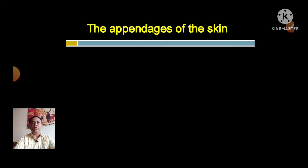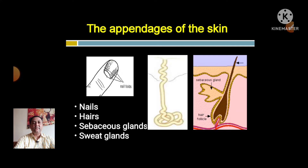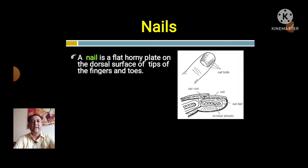Hello everyone, welcome back to my channel 'Let's Dissect Anatomy.' Here we are going to discuss Part 2 of the skin and fascia. In Part 1 we discussed the epidermis and dermis with all the layers and functions of the skin. Now the appendages of the skin: nails, hairs, sebaceous glands, and sweat glands.